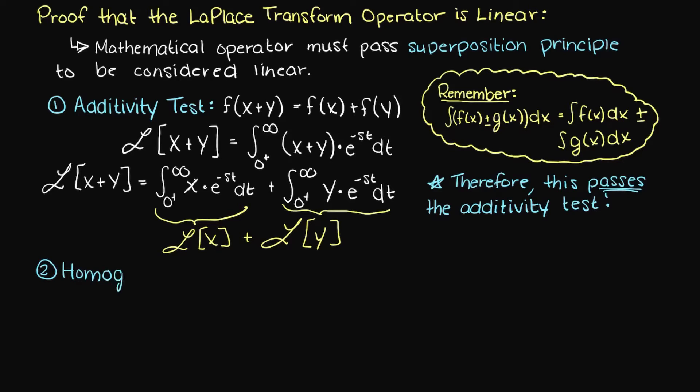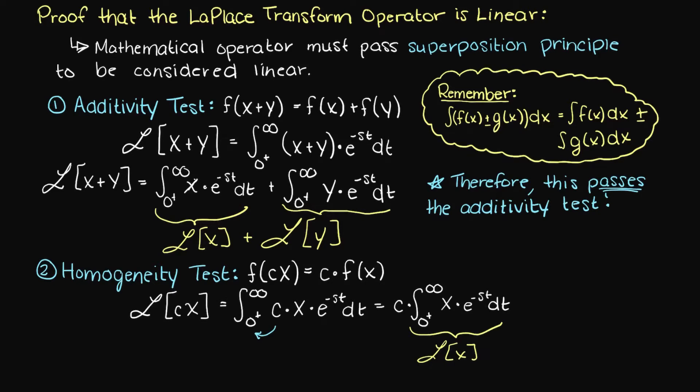Now let's move on to the homogeneity test. We write our function input times a scalar which is c, and in order to pass this test the result must be equivalent to the scalar outside the operator. As we can see here, it is certainly the same as a scalar term can simply be taken outside of our integral.